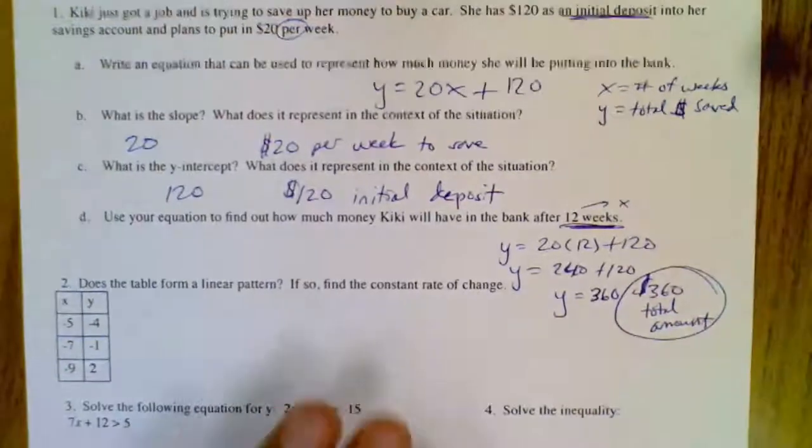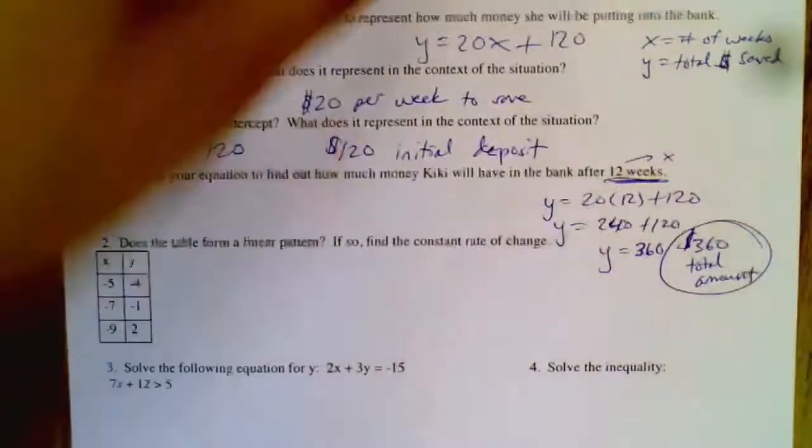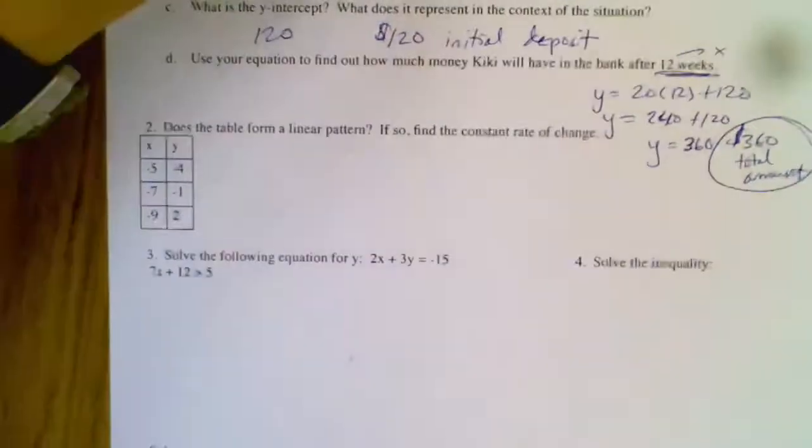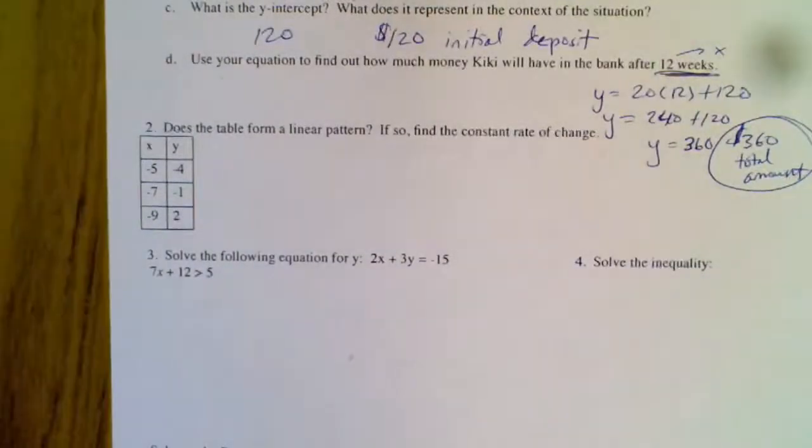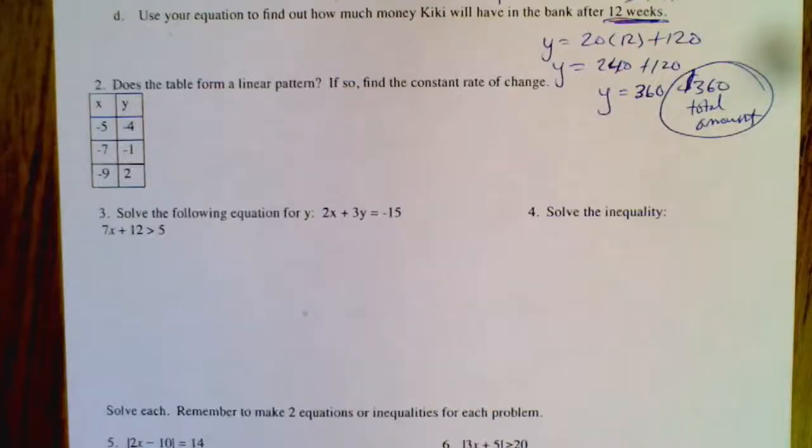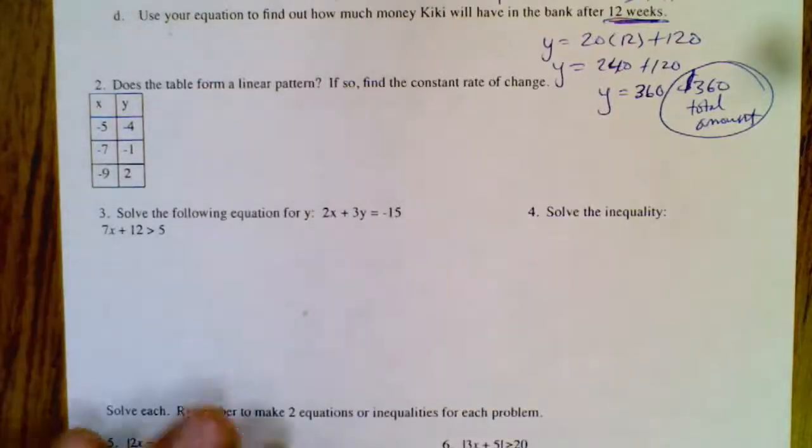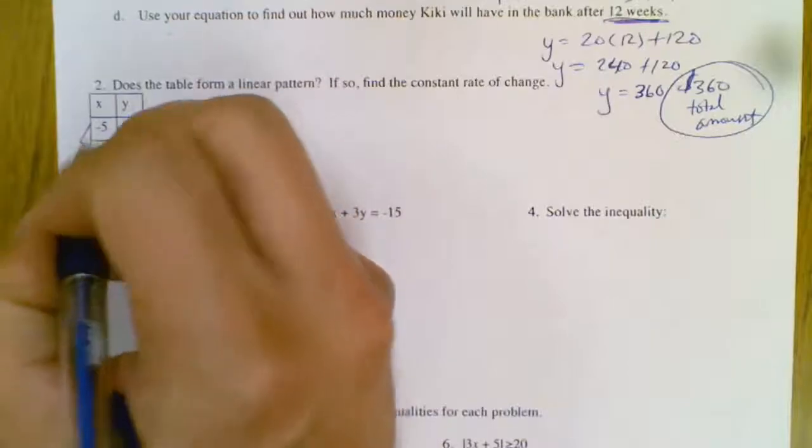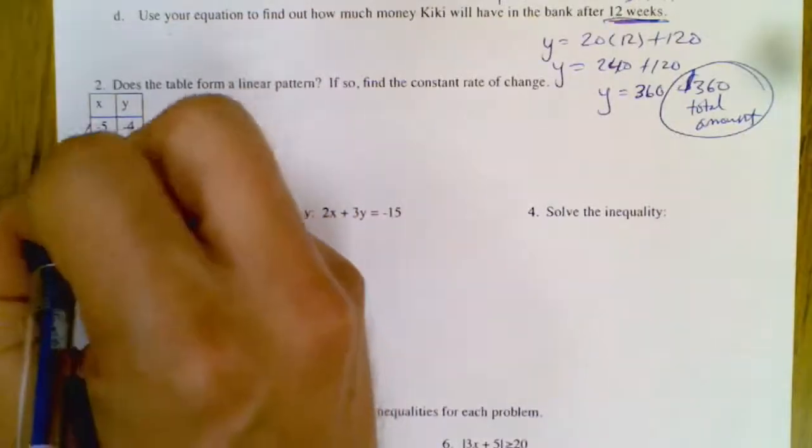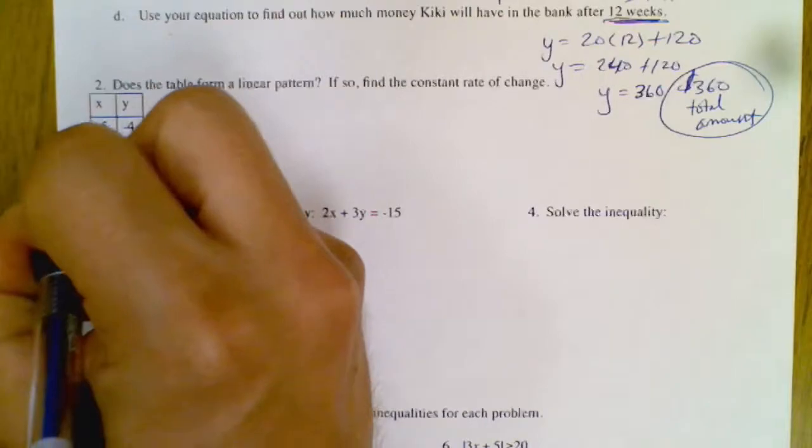Okay, so does this table represent a linear or form a linear pattern? Let's see, I like to see what does the x go up by every time. So minus 2, minus 2, looks like it's going down.